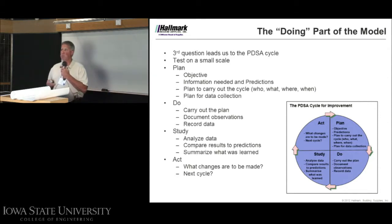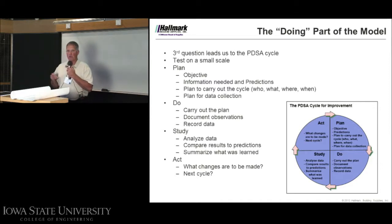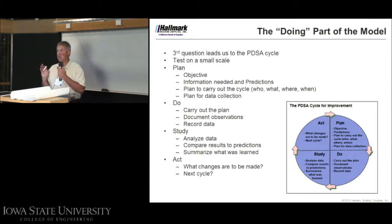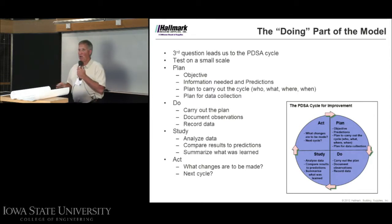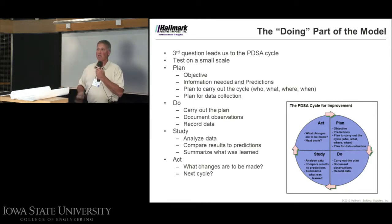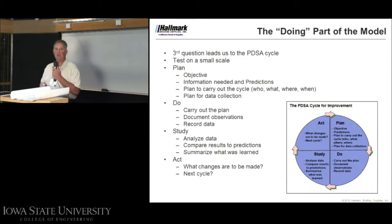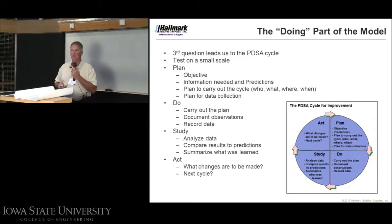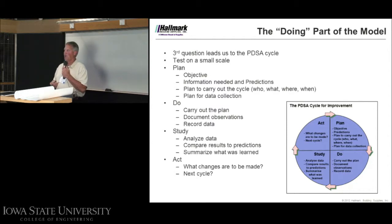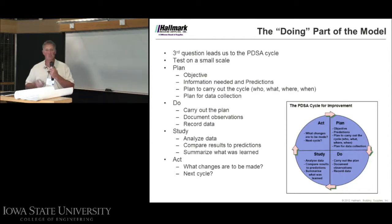Then we start to run Plan, Do, Study, Act cycles. Depending on the complexity, that will determine how many cycles we run. We're going to plan for what we're going to do, actually do it, then study it, and then act upon it. Acting upon it may mean we need to run another cycle, test it in another geography, or we're confident enough to implement. Or acting upon it may mean let's leave well enough alone. This tool allows us the opportunity to run that process.